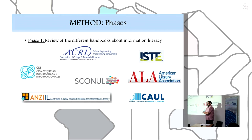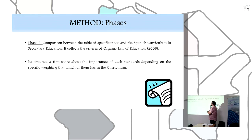We have five phases. Phase 1 is the review of the different handbooks on information literacy. In phase 2, we compare the table of specification and the Spanish curriculum in secondary education. It's obtaining a first score about the importance of each standard depending on the specific weighting that each of them has in the curriculum.